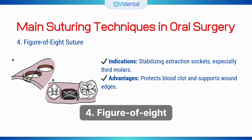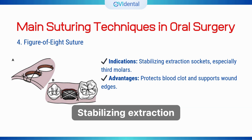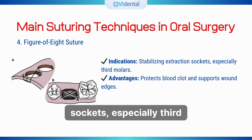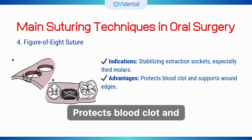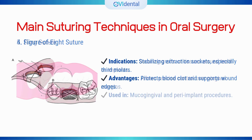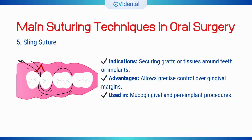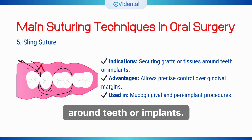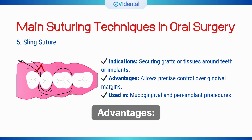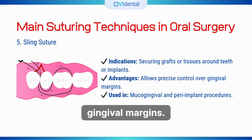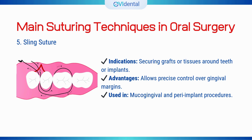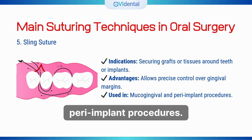4. Figure of 8 suture. Indications: stabilizing extraction sockets, especially third molars. Advantages: protects blood clot and supports wound edges. 5. Sling suture. Indications: securing grafts or tissues around teeth or implants. Advantages: allows precise control over gingival margins. Used in mucogingival and peri-implant procedures.